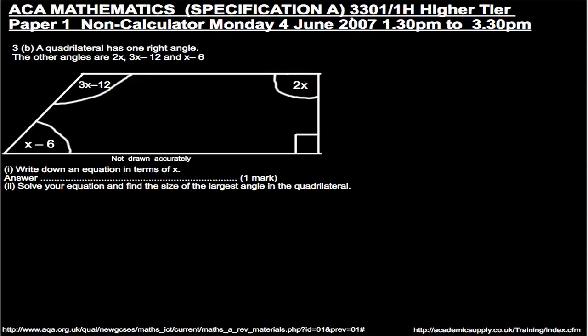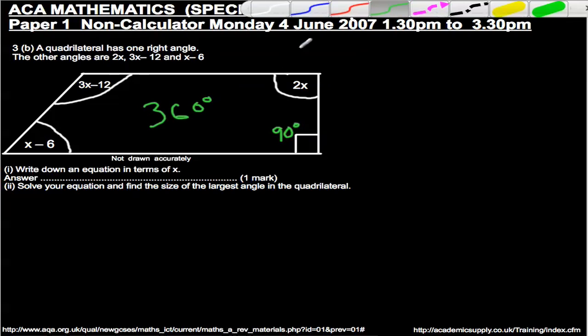Now let's have a look at question B. A quadrilateral has one right angle, the other angles are 2x, 3x minus 12, and x minus 6. So one here is a right angle, so we've got 90 degrees there. And the other angles, 2x, 3x minus 12, and x minus 6. Well, what do we know from question A? From question A, we know that all the angles of a quadrilateral should equal 360 degrees.